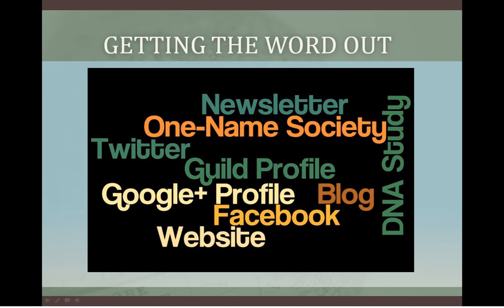The first topic we talked about with everyone who attended was getting the word out. I came up with a word cloud to get us started talking, and it took off from there. We discussed the various methods the Guild has, as well as methods people use on their own — whether that's a Guild profile, a Google Plus profile, Facebook, websites and blogs, or even a one-name society with a yearly meeting. A number of people use a newsletter format, some use Twitter, and a significant number of Guild members are involved in DNA studies.